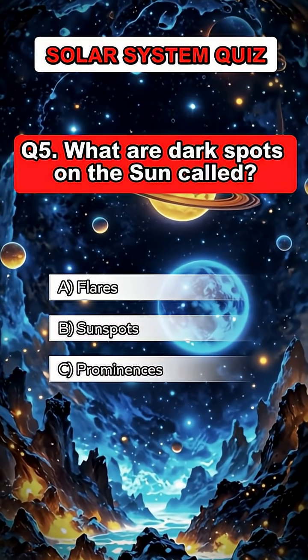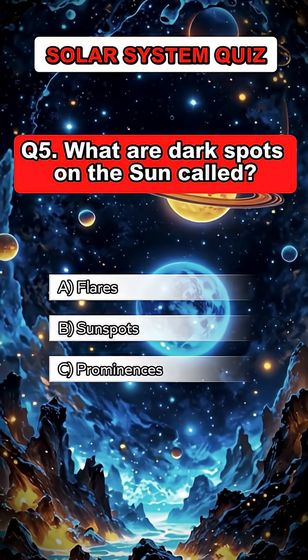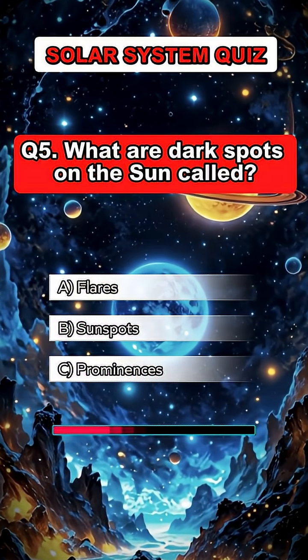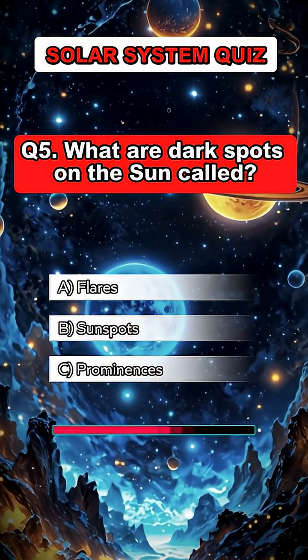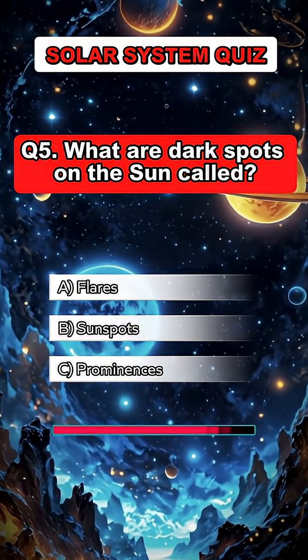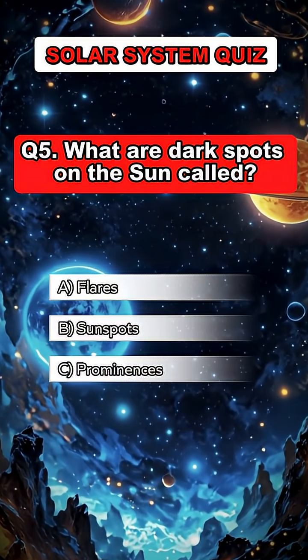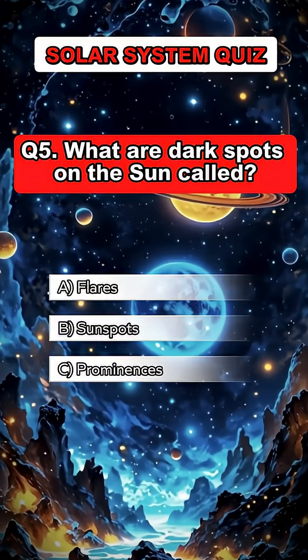Question 5. What are dark spots on the Sun called? Answer B. Sunspots.